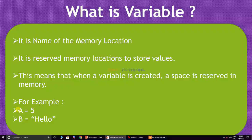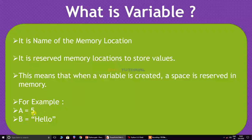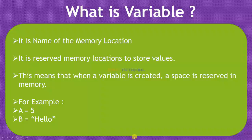This data is stored in some memory location, and that memory name is 'a'. This is string type data, stored for the 'b' variable memory location. I will explain using Python IDLE, so I am opening Python IDLE.